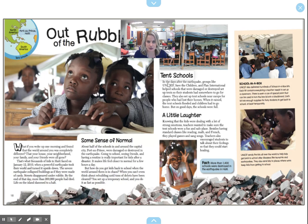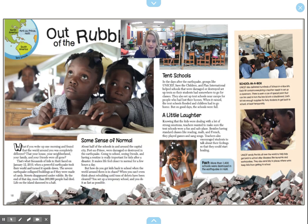We're going to take a look at page 19, the part that I'm circling right here, and we're going to read about the tent schools. The title says 'Tent Schools.' In the days after the earthquake, groups like UNICEF, Save the Children, and Plan International helped schools that were damaged or destroyed set up tents so that their students had somewhere to go for classes. They also set up tent schools near camps for people who had lost their homes. When it rained, the tent schools flooded and children had to go home, but on good days, the schools were full.